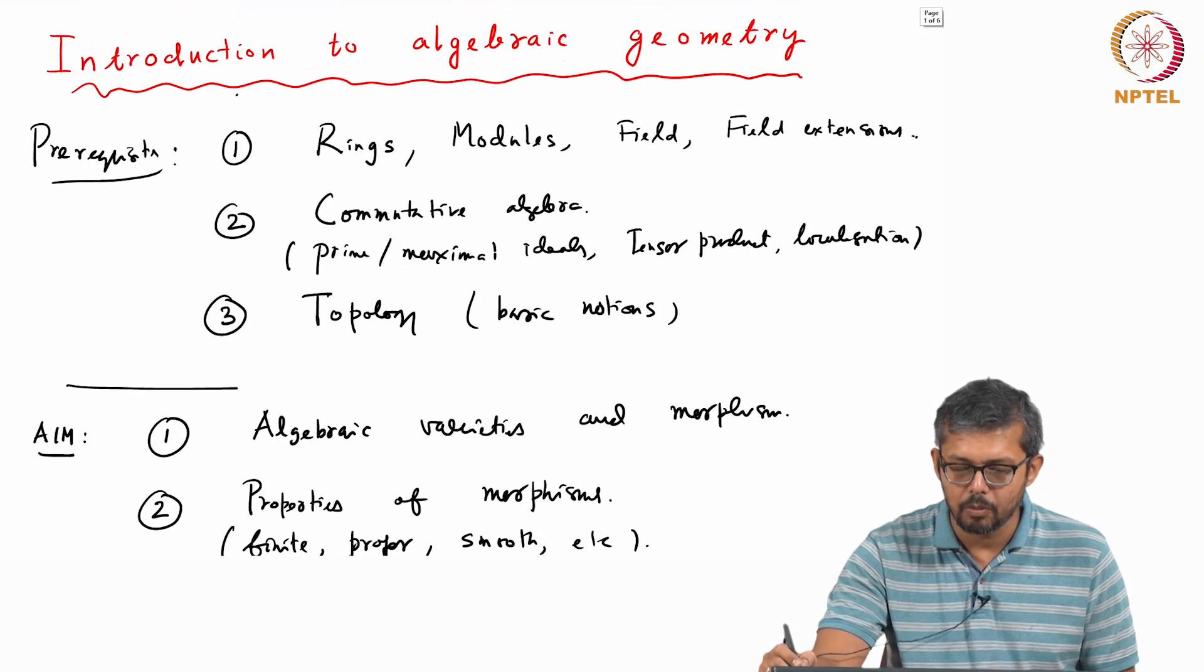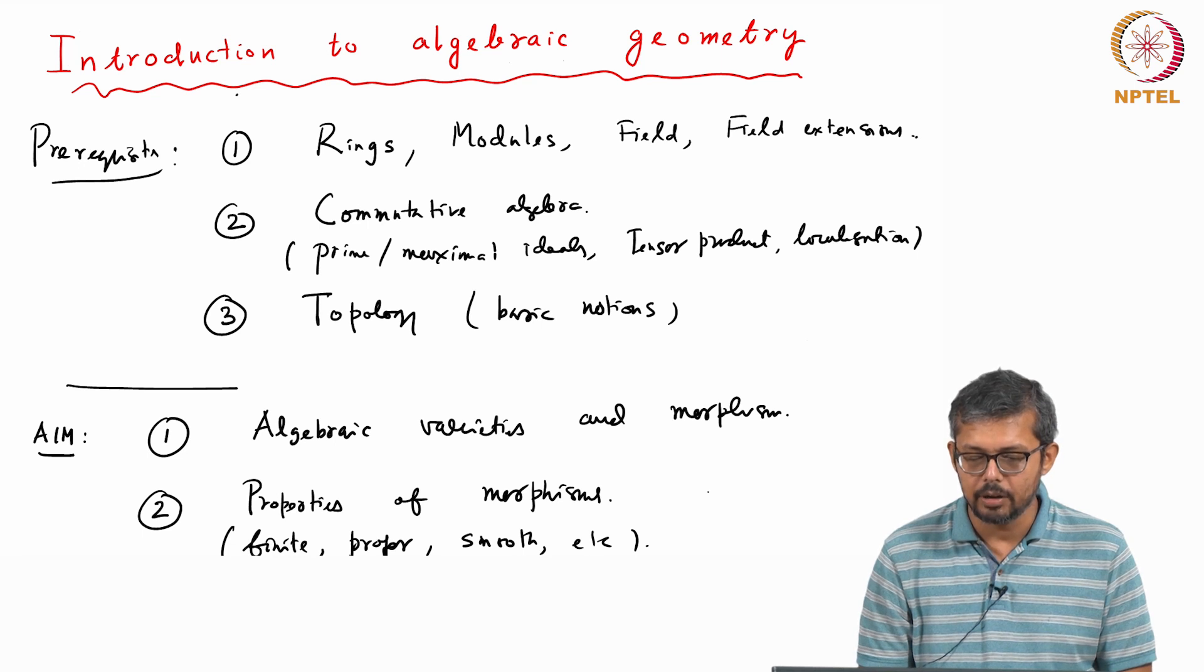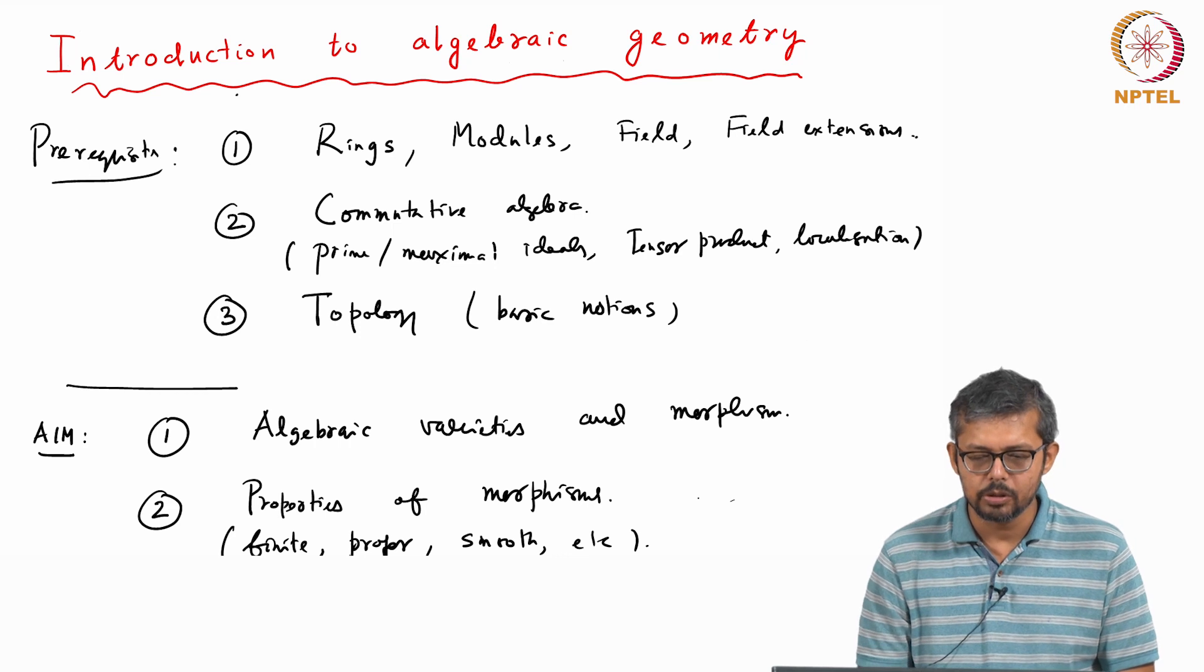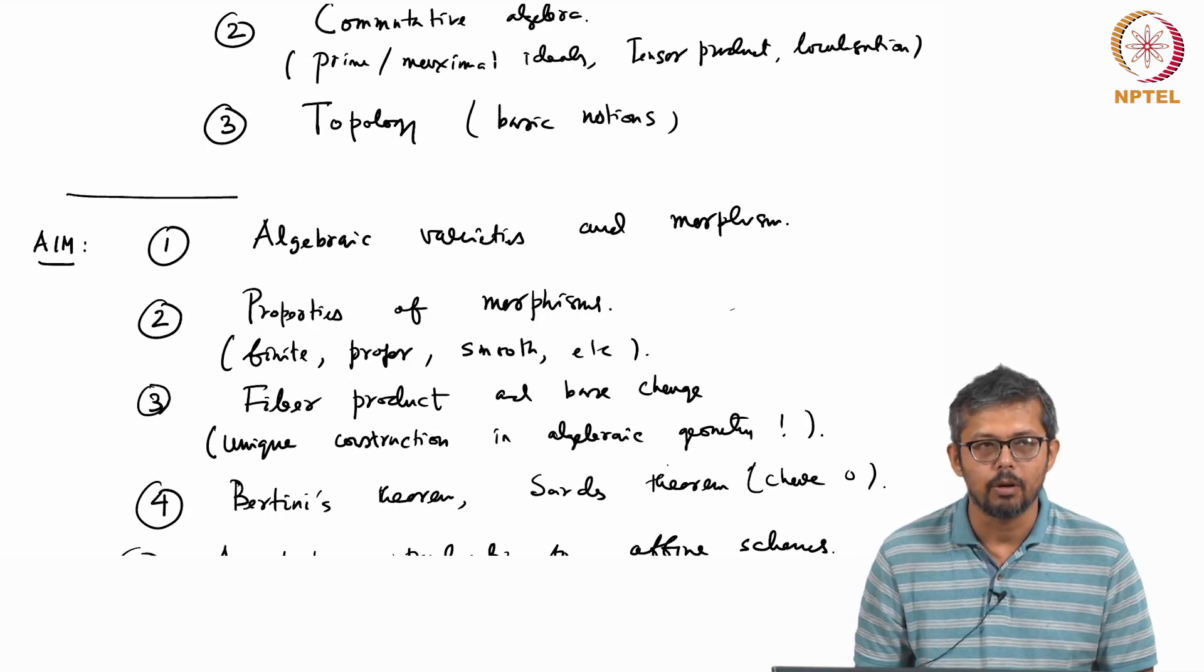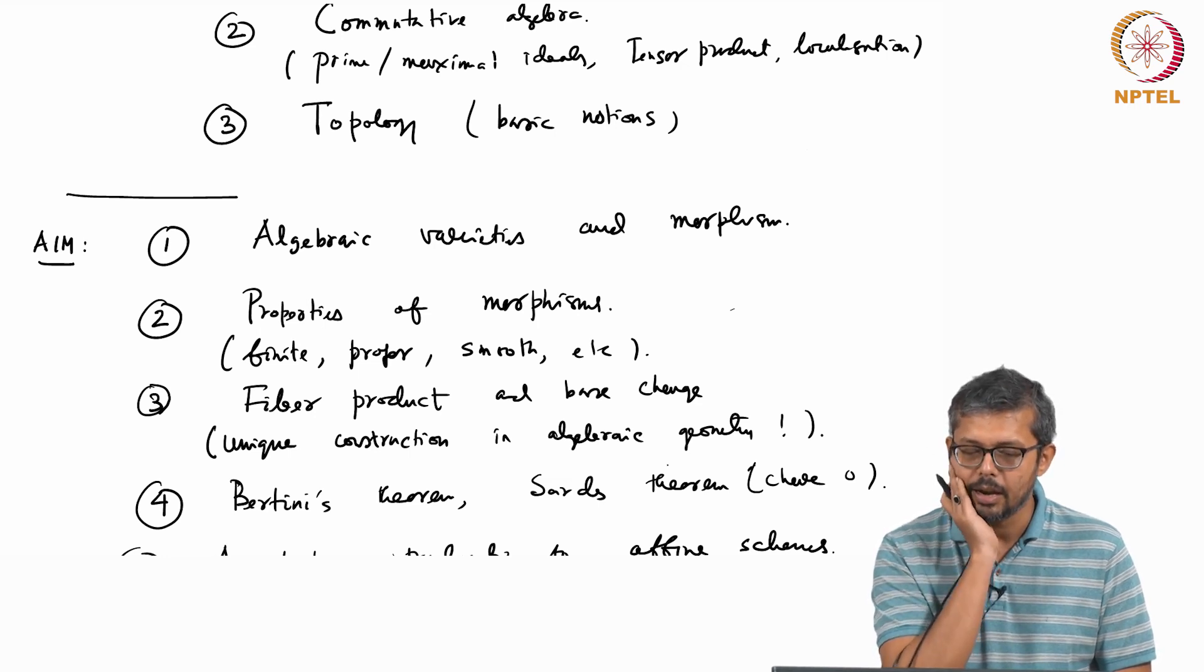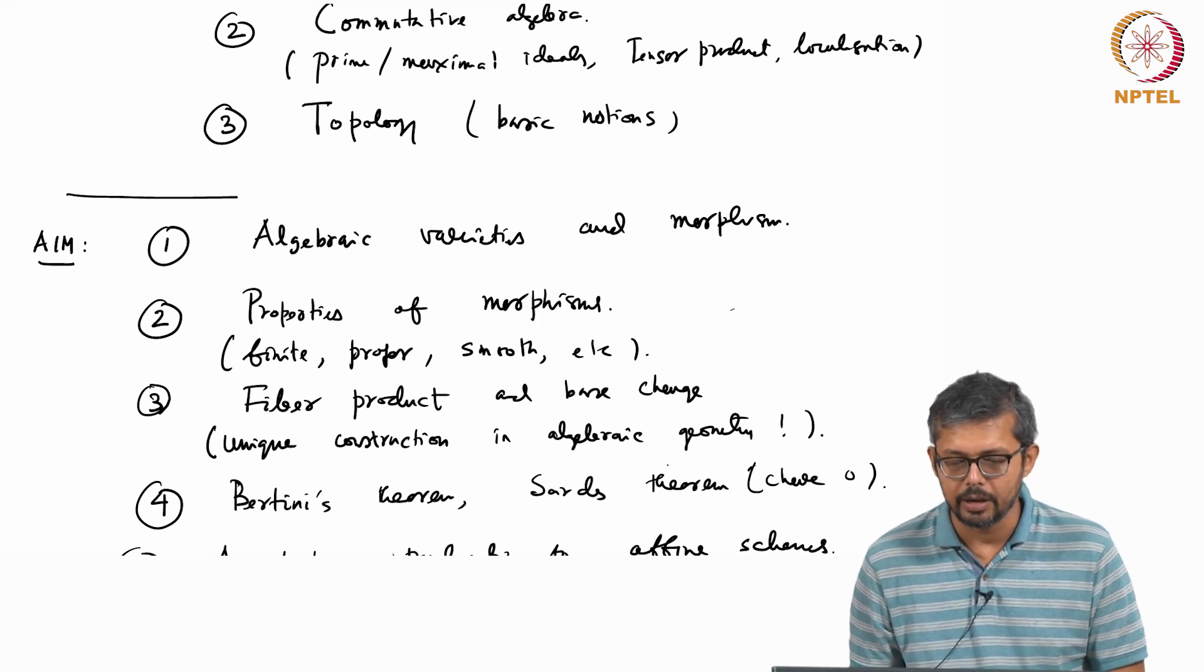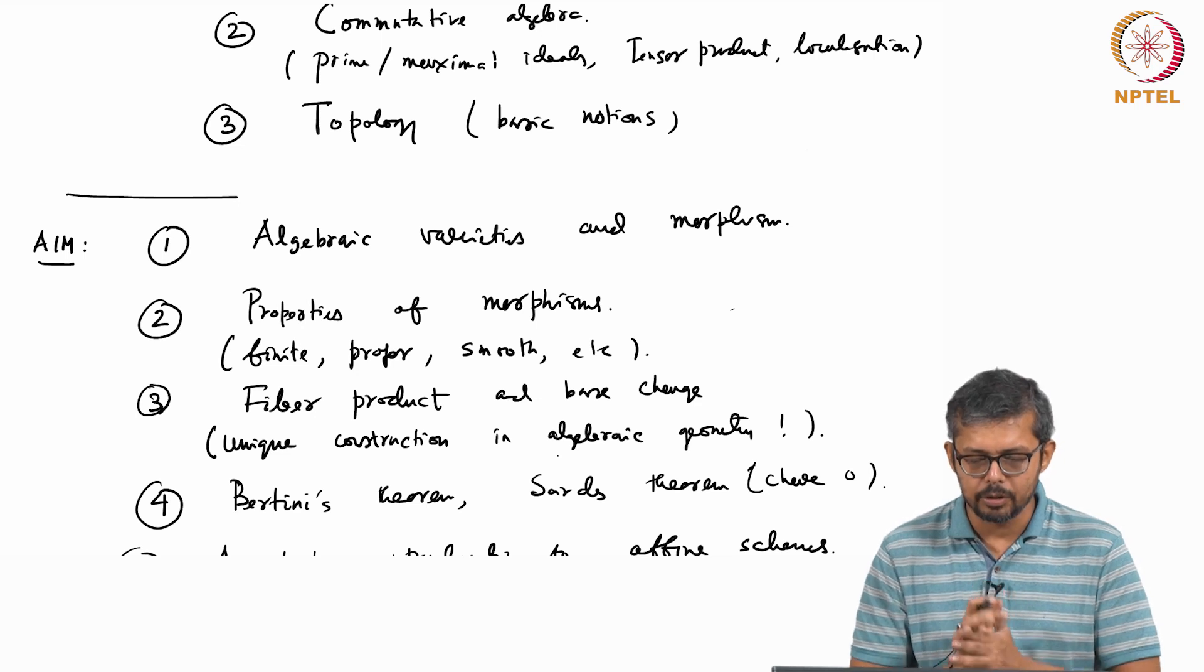In the first lecture, in the first two weeks I will mostly recall some results of commutative algebra. I will recall results in integral extensions, what is a valuation, Hilbert Nullstellensatz and Noether normalization. These are some basic theorems in commutative algebra which will be useful for this course. And from third week onwards I will start what is called algebraic variety - the first topic which is algebraic varieties and morphisms. We will start with what are called affine algebraic varieties and slowly we will build the subject. We will go towards the definition of abstract algebraic variety and then we will do the fiber product and then properties of morphism.